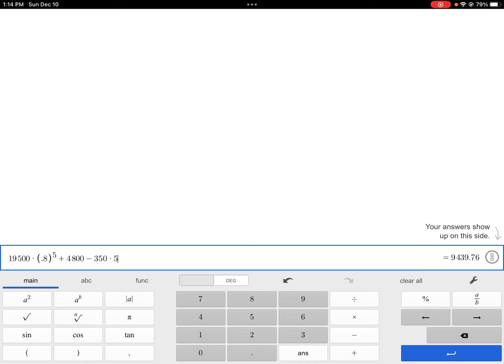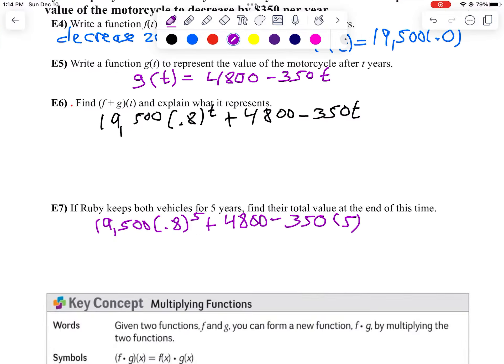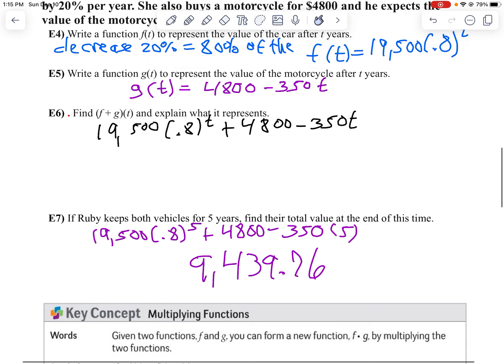So out of her initial investment, she's got $9,439.76. Investing in vehicles is not a smart idea. You lose money. Now, if she's going to ride them, she's going to get some enjoyment out of it. So that's good. So you just have to realize you're paying for that.